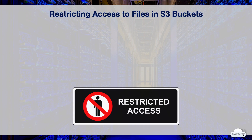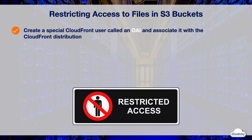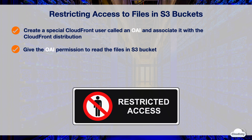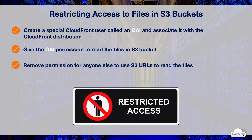You can secure contents in an S3 bucket so that users can access them through CloudFront but cannot access them directly with S3 URLs. This prevents people from bypassing CloudFront and using the S3 URL to get contents you want to restrict access to. This step isn't required to use signed URLs, but it's recommended. Here are the steps: first, create a special CloudFront user called an Origin Access Identity or OAI and associate it with the CloudFront distribution. Next, give the OAI permission to read files in the S3 bucket. Finally, remove the permission for anyone else to use S3 URLs to read the files.